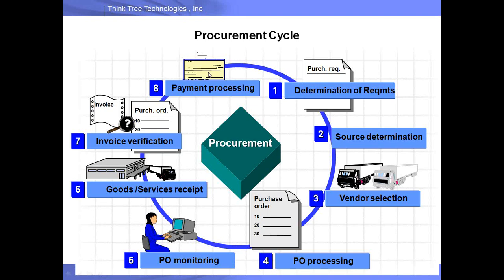Let me talk about a typical procurement cycle. For stock items, we have an eight-step process. Step one: we determine the requirement. The SAP MM module starts with an event where there is a need for an item, captured as a purchase requisition. Step two is source determination. Step three is vendor selection. Step four is purchase order processing, in which we create a purchase order.